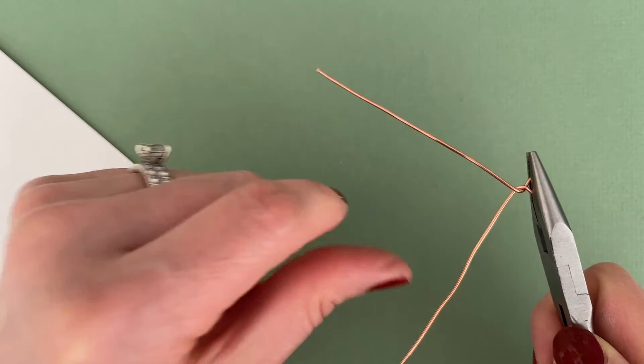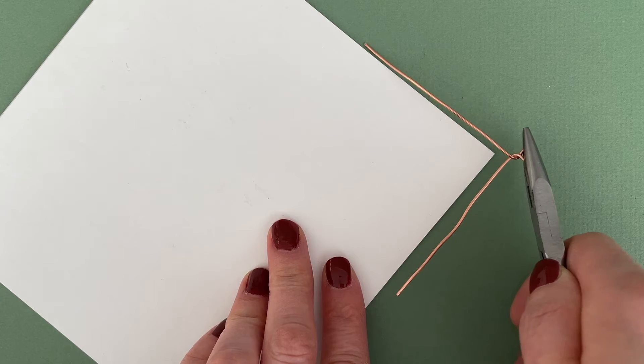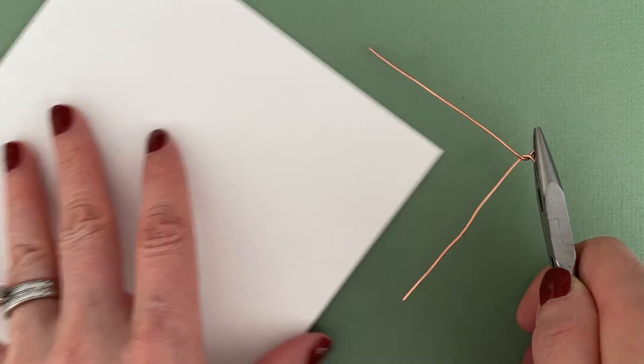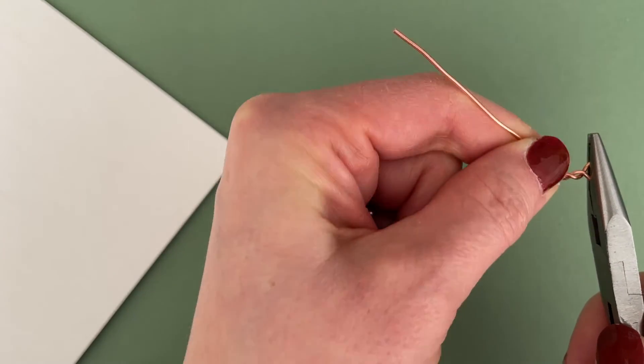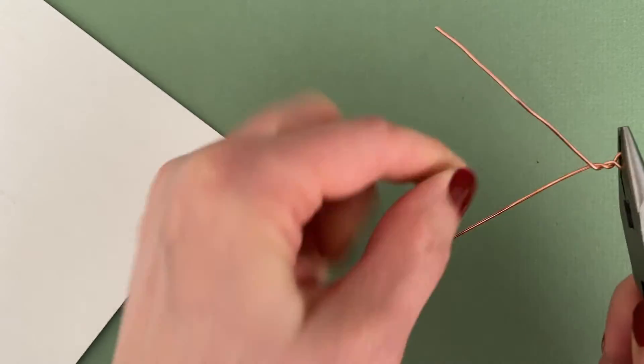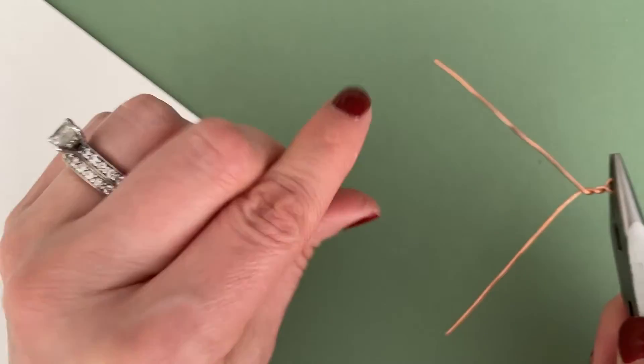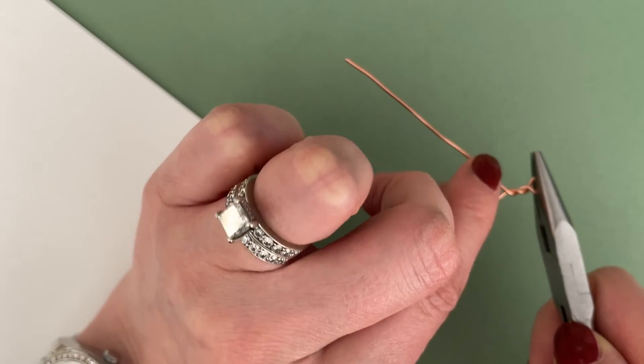Before I move on to do my next revolution, I just want to again confirm that these legs of my wire are still at that 90 degree angle. Each and every time, I'm going to use the same hand position, and before I do the next revolution, I'm just going to adjust the legs of my wire accordingly just to make sure they maintain that 90 degree angle.